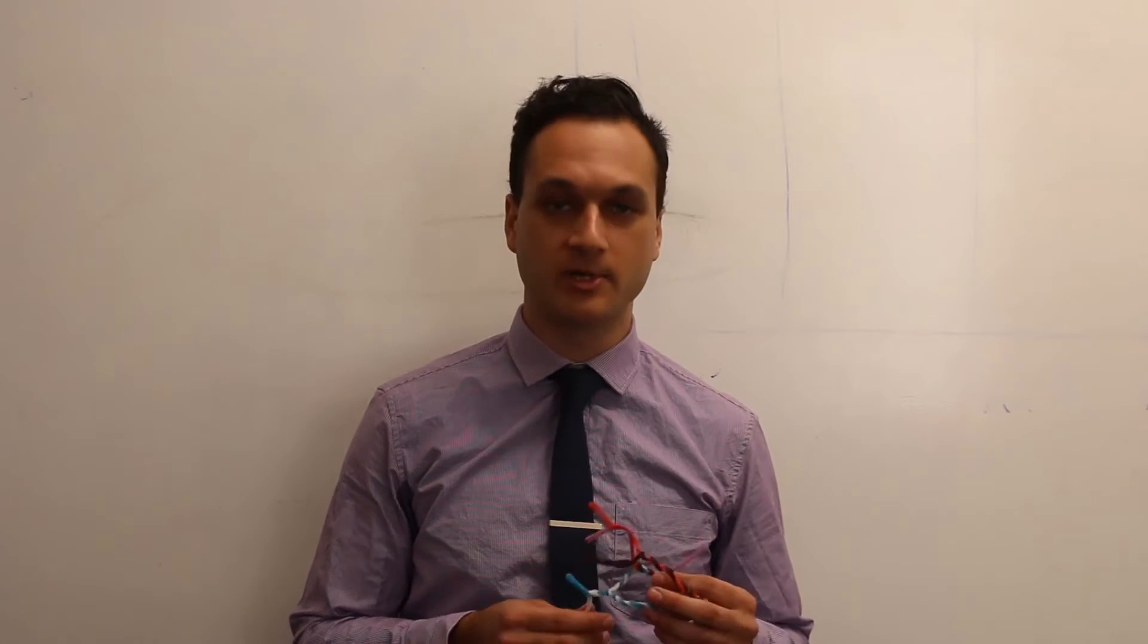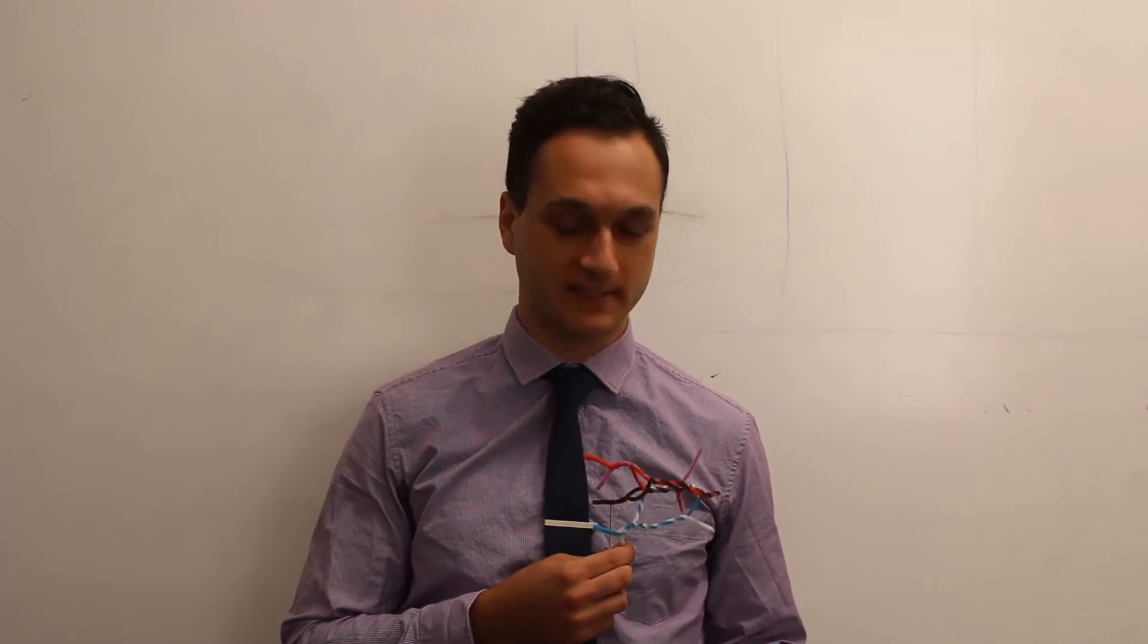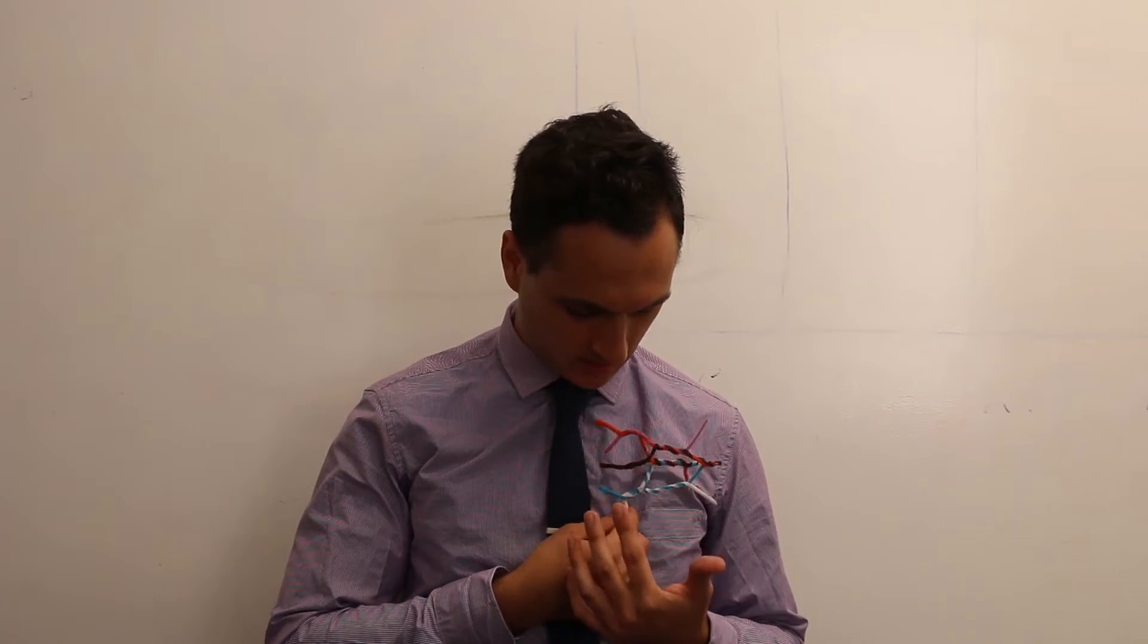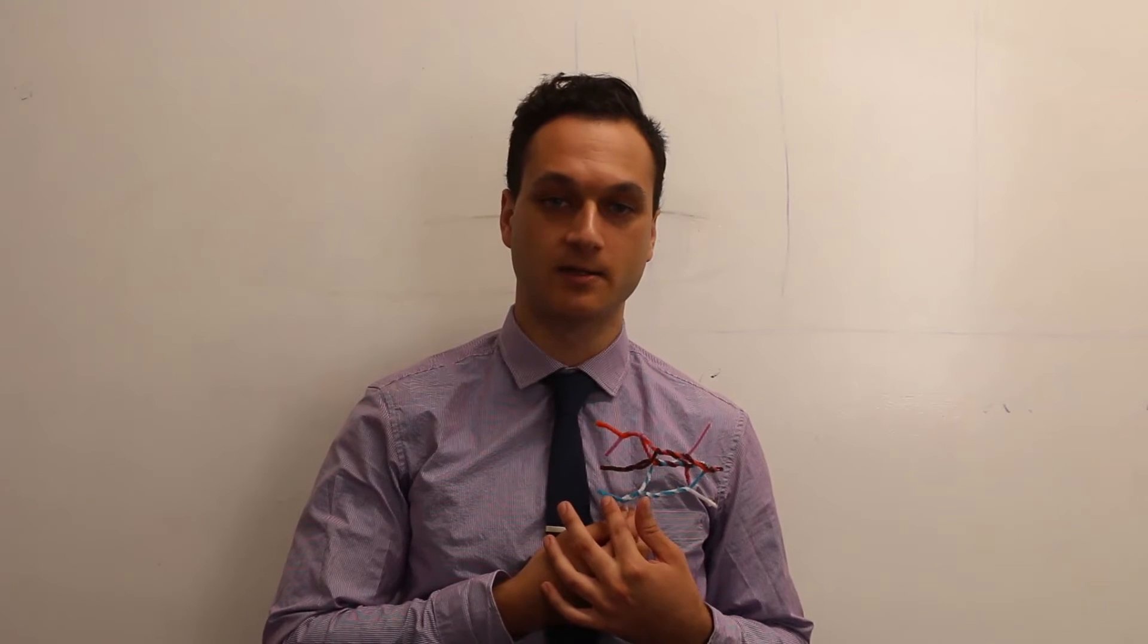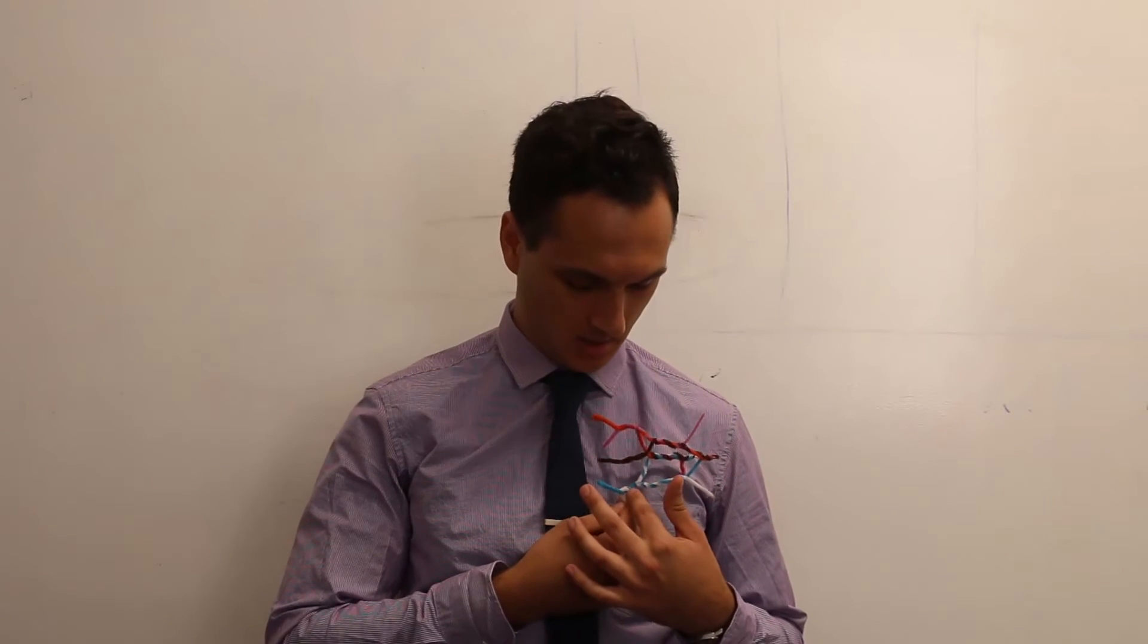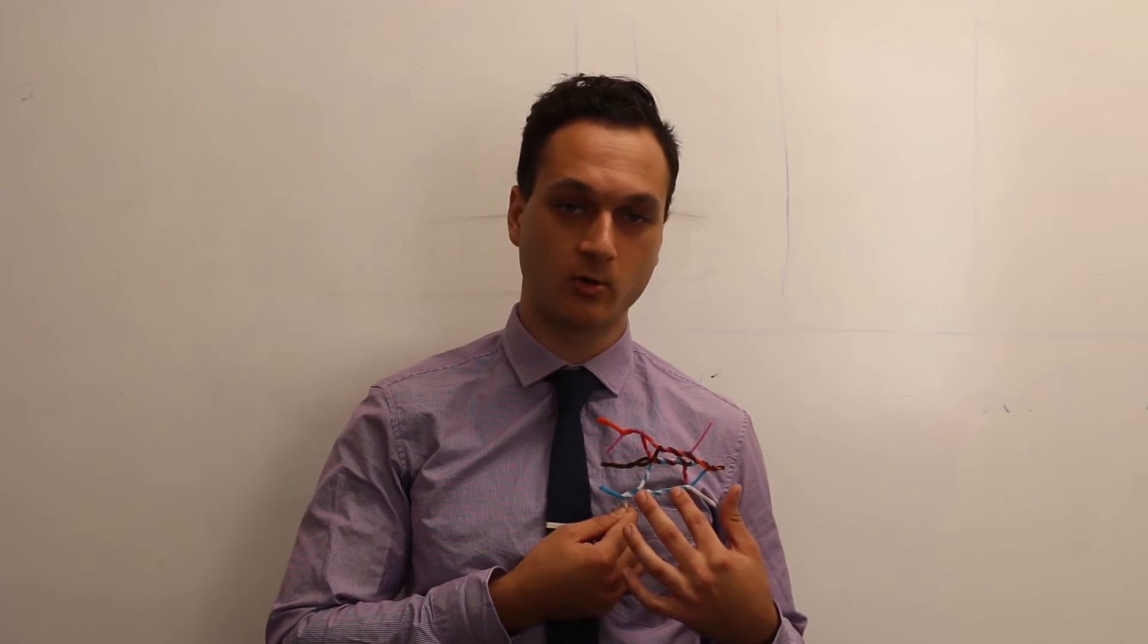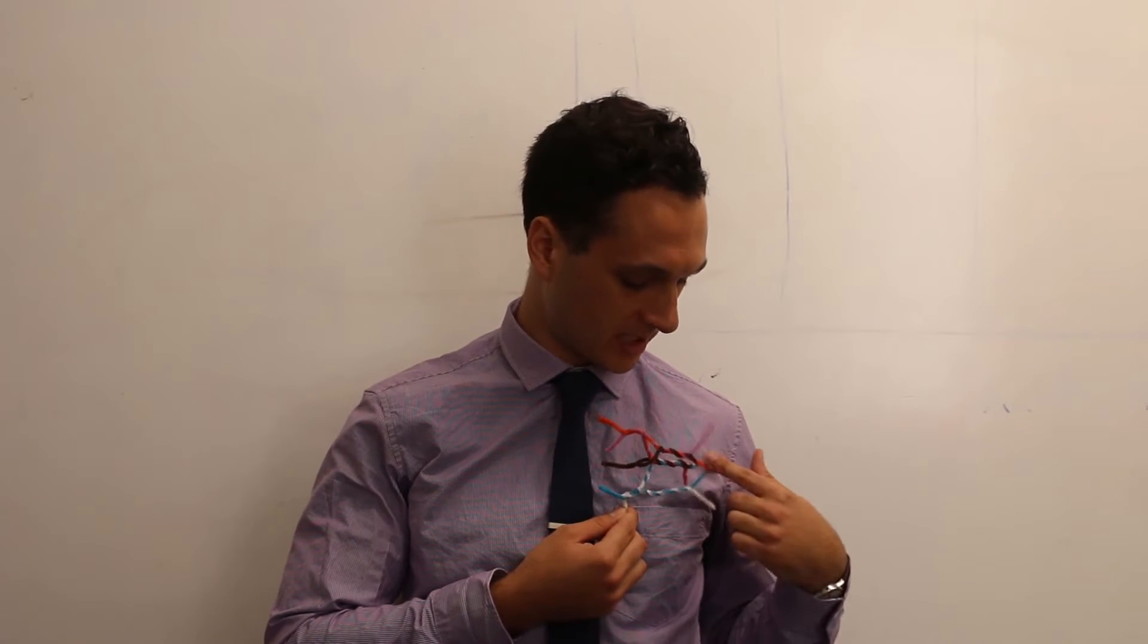So I've made a brachial plexus model of pipe cleaners that corresponds to the left side of the brachial plexus. Moving medially to laterally, you can see that this model contains the cervical roots, trunks of the brachial plexus, divisions of the brachial plexus, the three cords, and finally the five different branches.